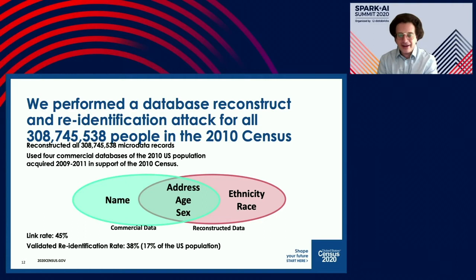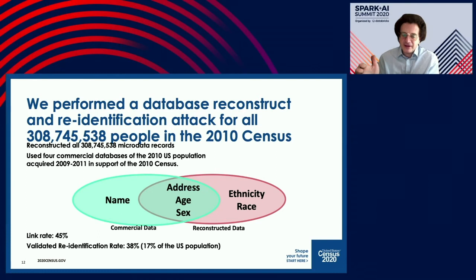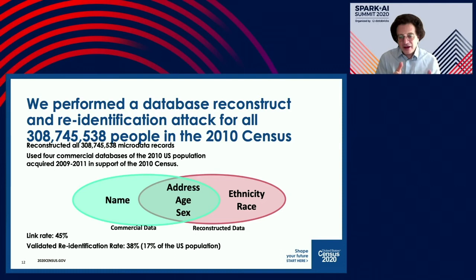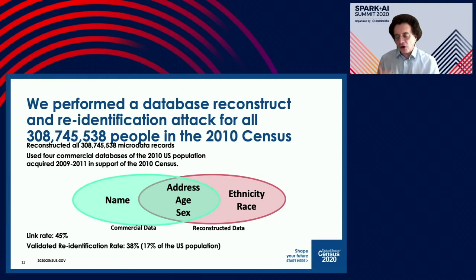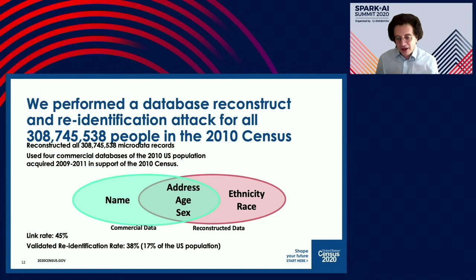We reconstructed all 308,745,538 microdata records. Those records have age, address, sex, and ethnicity, but not name. So we then bought a commercial database that had names, addresses, ages, and sex. Linking the two databases gives you a linkage between name and ethnicity and race — which most Americans consider very confidential. Our linkage rate was about 45%, and the re-identification rate was around 38% of the linked data, meaning that for about 17% of the US population, we could reconstruct the confidential data.